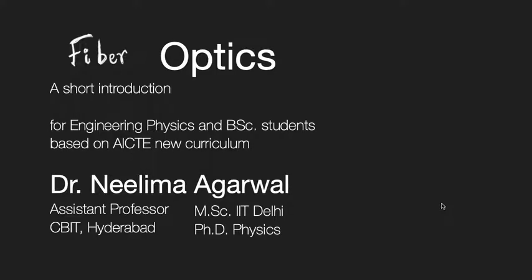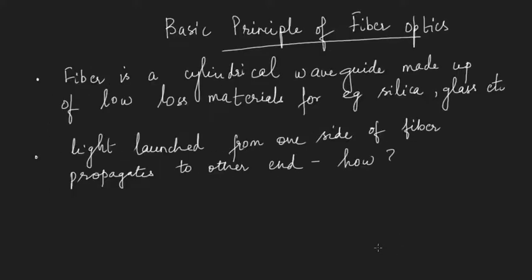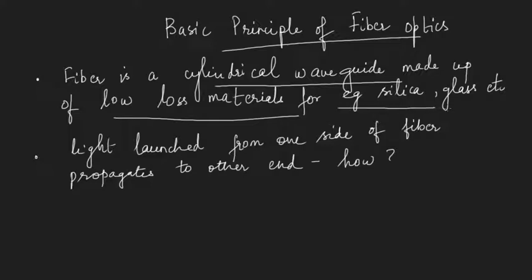First we will try to understand what is an optical fiber and what is the basic principle of physics on which it is based, then we will move further. So basically, a fiber is a cylindrical waveguide which is made up of low-loss materials. Low-loss so that whenever any light is launched inside the fiber, the loss is less and the output is more. It can be made of many materials such as silica glass.